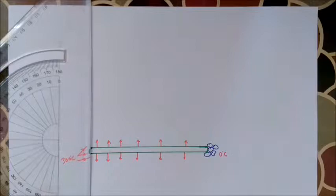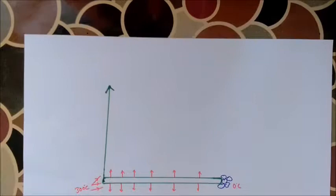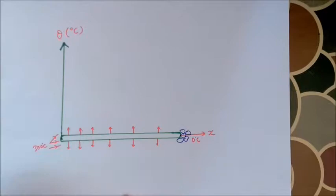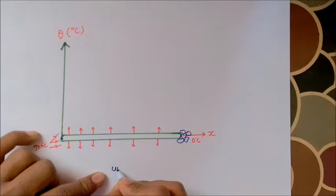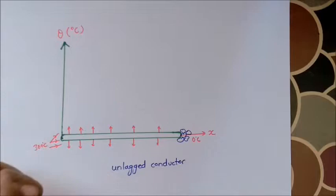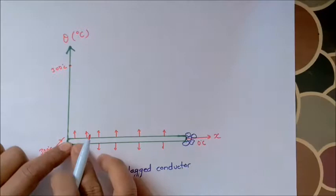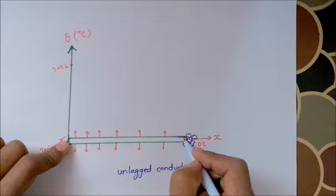Let's see the graph. Let's see the vertical axis. The vertical axis represents the temperature theta in degrees centigrade. This is the y-axis. This is the x-axis, representing distance. In the case of an unlagged conductor, the temperature at one end is 300 degrees centigrade and the temperature at the other point is 0 degrees centigrade.